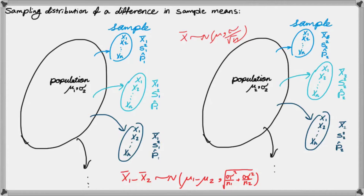We are going to use these definitions to develop confidence intervals and hypothesis testing for the difference between averages of the two populations. Remember, the whole purpose here is that we typically don't know what mu and sigma are, and we try to come up with some approximation for the actual mu by looking at samples. That's the whole idea of the sampling process.